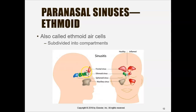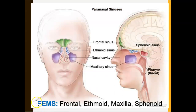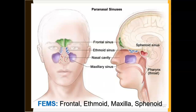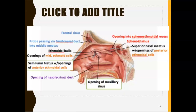We also have ethmoid air cells, or ethmoid sinuses. The ones closer to the front are known as anterior air cells, and the ones in the back are known as posterior air cells. A good way to remember your paranasal sinuses is the mnemonic FEMS: F for frontal, E for ethmoid, M for maxillary, and S for sphenoid sinus.